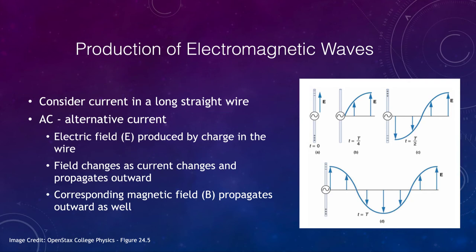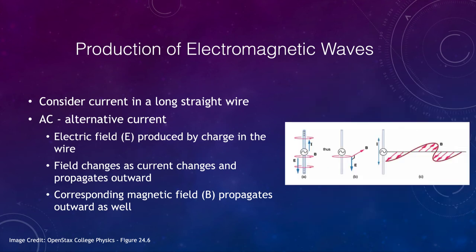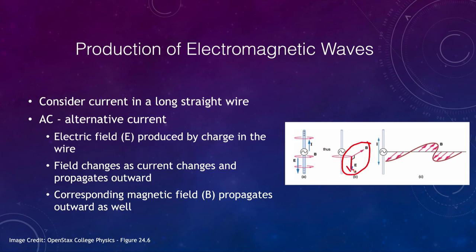As that electric field propagates outward, what happens to the magnetic field? The magnetic field is produced perpendicular to the electric field. The electric field goes up and down parallel to the wire, while the magnetic field is induced perpendicular to that. A current moving through the wire produces an electric field, and that changing electric field produces a magnetic field. The electric and magnetic fields are always perpendicular to each other — electric field along the direction of the wire, magnetic field at 90 degrees away — leading us to the idea of electromagnetic waves.